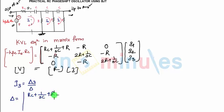Which will be: RC plus 1/(sC) plus R, minus R, 0; minus R, 2R plus 1/(sC), minus R; 0, minus R, 2R plus 1/(sC). So when you solve this, you will get from here.